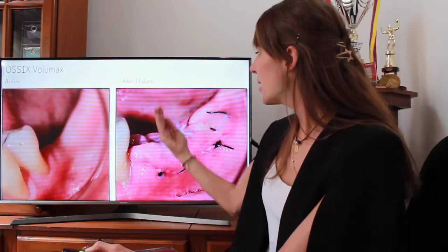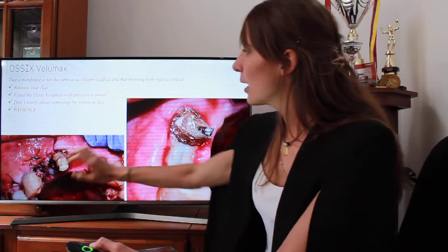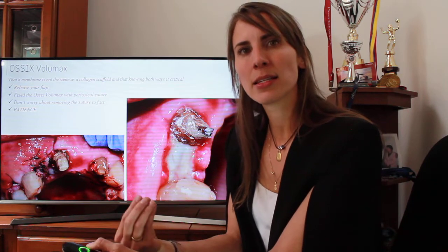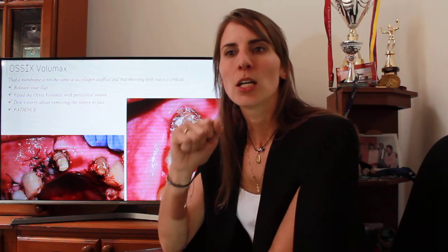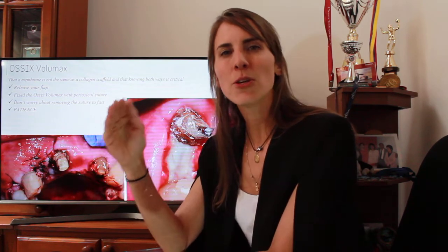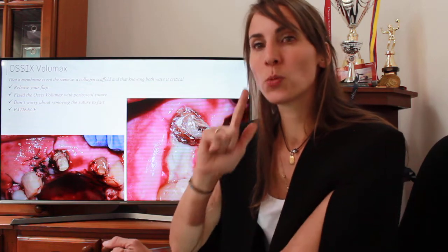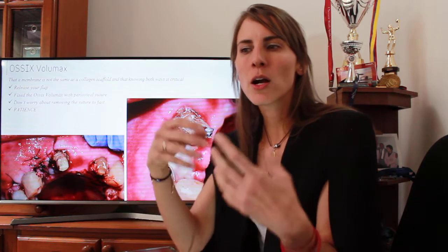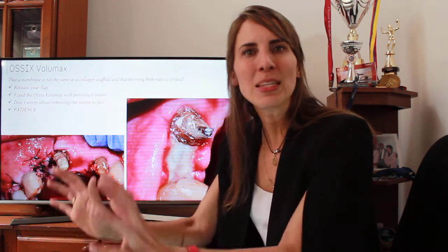Then I close it. Eighteen days after, I can see the volume is now different. In the last case I closed the wound very well without tension, but I made a mistake — I cut the suture too fast, removing it at eight days after the surgery. We have to wait a longer time: 15 to 20 days. Use a monofilament to avoid infections and contamination in the wound. Release your flap very well, or fix the O6 Volumax with periosteal suture. You don't always have to fix the O6 Volumax or the O6 Plus with suture because they are very manageable, but it's important when you want to produce more stabilization in the wound.